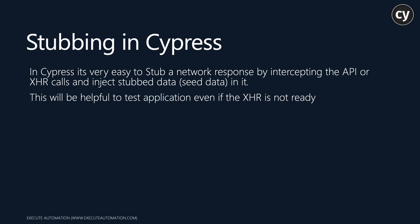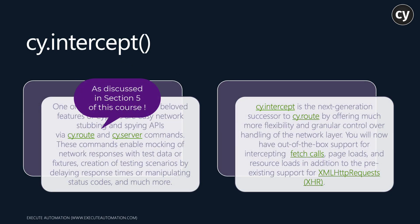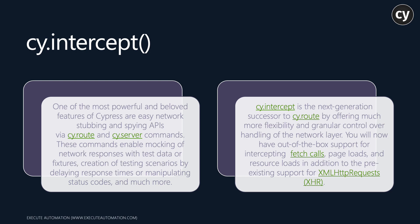There was a very prevalent way of doing this using cy.route and cy.server before Cypress 6, but now after Cypress 6 there is cy.intercept, which is very handy and is the next-generation successor to cy.route. It offers more flexibility and granular control over handling of the network layer. You now have out-of-the-box support for intercepting fetch calls, page loads, and resource loads, in addition to the pre-existing support for XMLHttpRequest. Fetch call support was not available before in cy.route and cy.server, but now it is supported with cy.intercept.